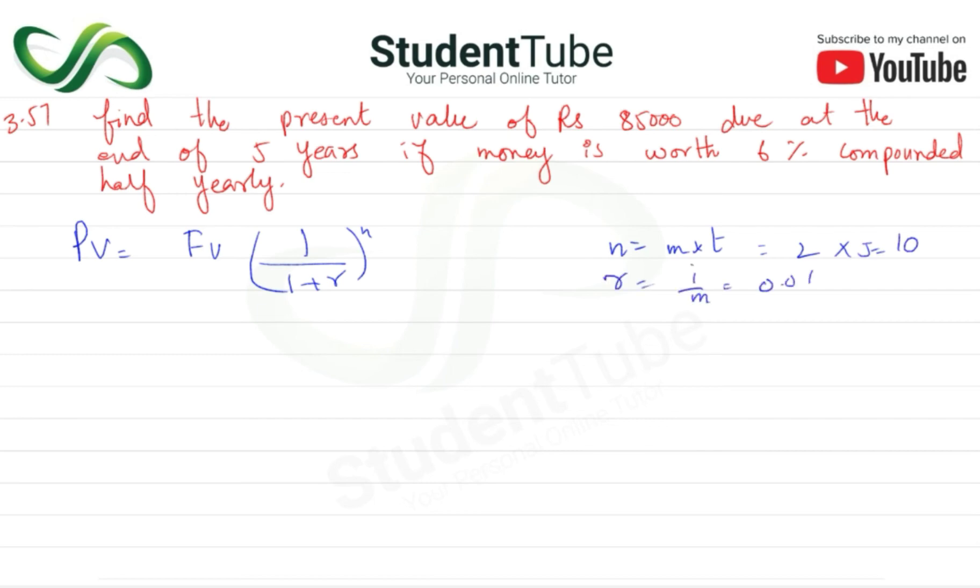0.06. M hai half yearly, that means 2. Do no ko divide karen toh aayega 0.03. So FV mein